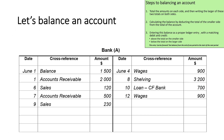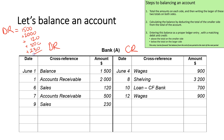So let's have a look at balancing an account using this example. We have a bank account, so let's follow the steps. We're going to total up each side — the debit side and the credit side. The debit side equals 1,500 plus 2,000 plus 120 plus 500 plus 230, giving a total of 4,350. On the credit side, adding 900, 3,200, 700, and 900 gives a total of 5,700.